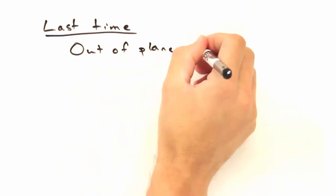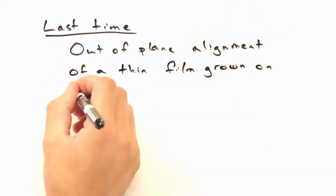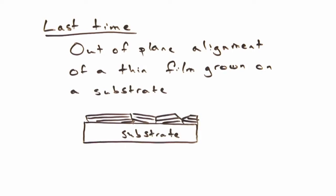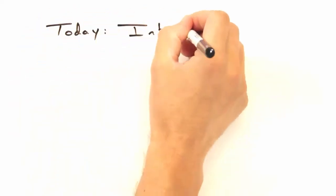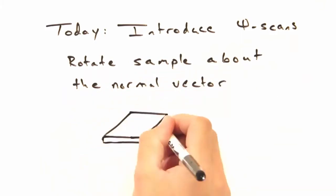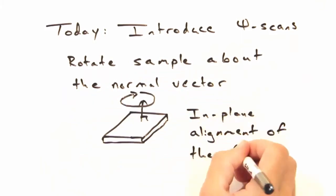Last time we took a look at how to determine the out-of-plane alignment for a thin film grown on a substrate. The goal today is to introduce phi scans, which rotate the sample about its normal and allow us to probe the in-plane alignment of the film.